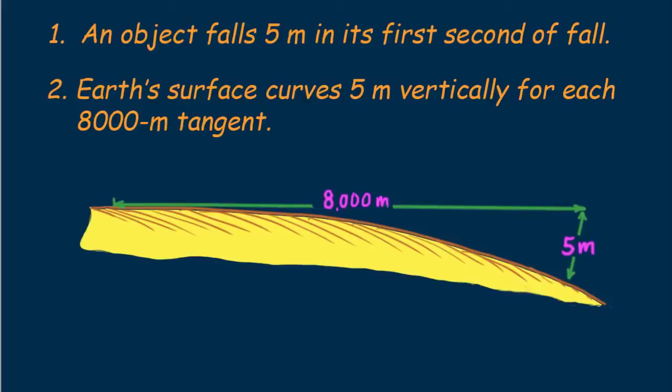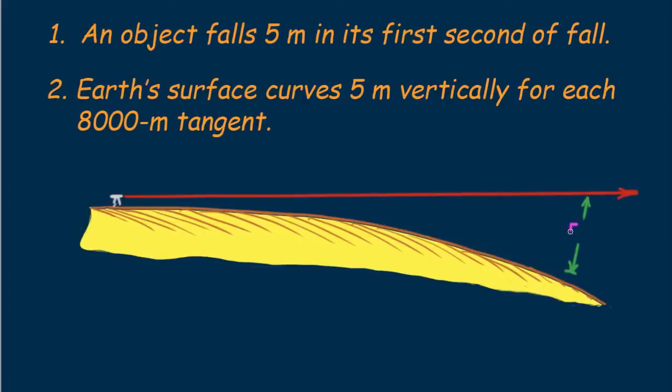Consider a portion of earth in a desert region where the land is flat and without obstructions. Let's mount a laser on a tripod about a meter above ground level and shine a laser beam horizontally out across the desert floor. Due to earth's curvature the beam down range would be higher above the ground than at its starting point. At 8 kilometers down range the beam would be 5 meters above its starting level. This may prove interesting.